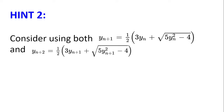Hint number 2. Consider using both yₙ₊₁ equal to half of 3yₙ plus the square root of 5yₙ squared minus 4, and yₙ₊₂ equal to half of 3yₙ₊₁ plus the square root of 5yₙ₊₁ squared minus 4 together. You should aim to get some kind of factorization.